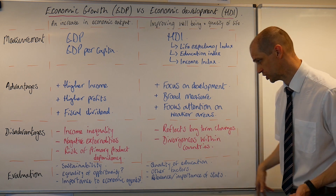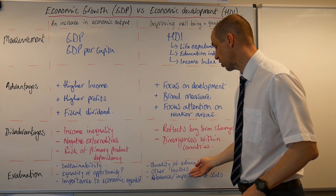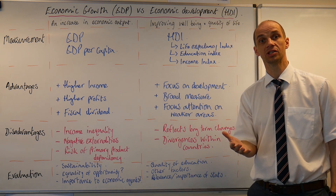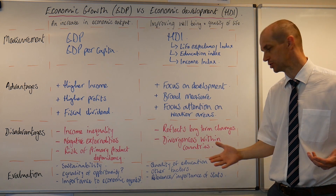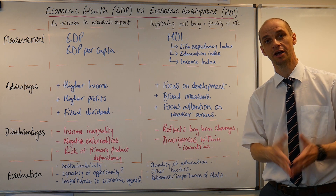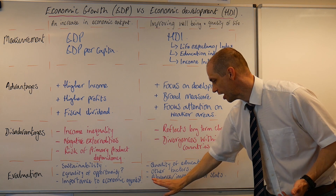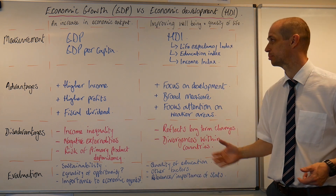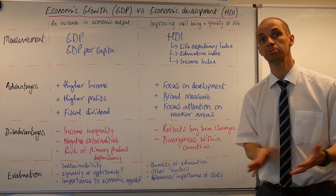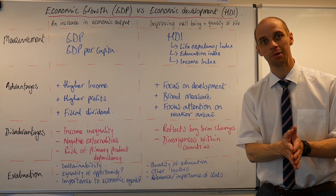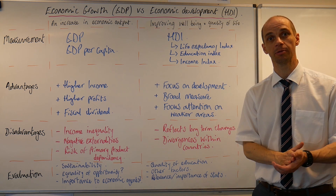Looking at evaluative points in relation to HDI — what about the quality of education that's actually provided? It's one thing providing education, but how good is it? There are other factors to consider that aren't included within HDI, such as political freedom as well as individuals' ability to express themselves and be tolerated for what they believe in. It doesn't include everything. And what about the relevance and importance of statistics? Why focus on developing a good measurement when it doesn't actually help to feed people — surely that should be the primary objective. But then again, how do you know how desperately you need to feed certain populations? Perhaps by checking those life expectancy statistics.